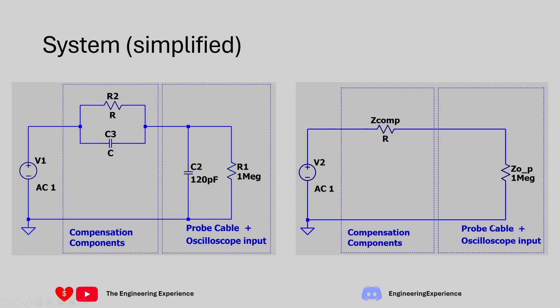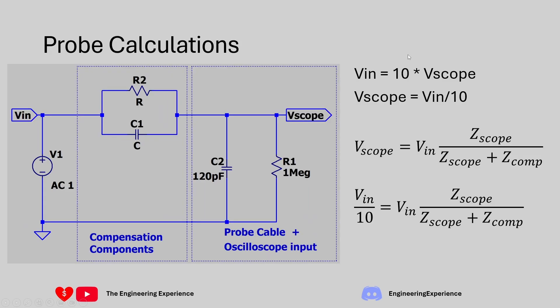This gives a very simple representation of the system we saw beforehand. Now, as we know from the question, v_in is going to be 10 times v_scope for a 10x probe, so v_scope equals v_in divided by 10. The voltage at the scope end is one tenth of the voltage at the input.